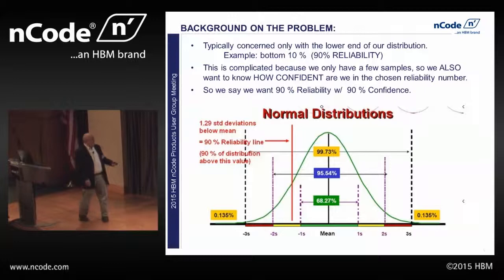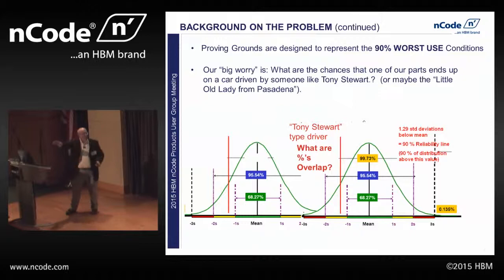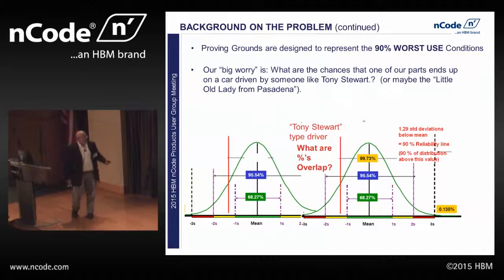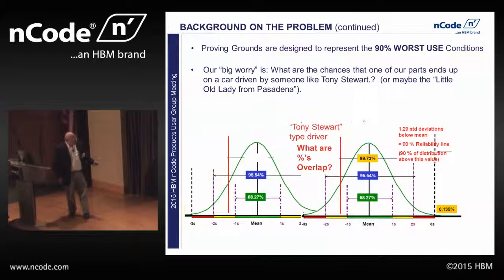Our problem is our proving grounds may be designed to represent the worst 90% of drivers ever — and that's Tony Stewart. Because we're from Columbus, Indiana, we can pick on Tony Stewart; he's a neighbor of mine, about a mile away. What happens if my worst parts are driven in a vehicle that Tony Stewart's got? He actually owns a Cadillac — if his Cadillac has a problem, I'm in trouble. That's our big concern.